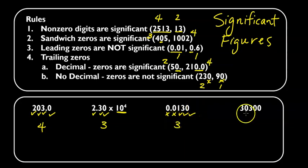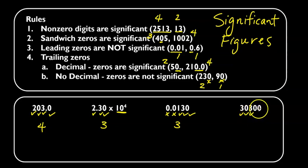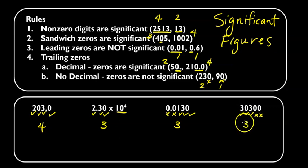30,300 — the threes are significant, they're non-zero. We have a sandwich zero there. And then the trailing zeros are not significant because there's no decimal, so this has three significant figures.